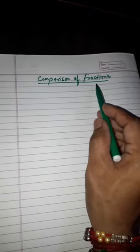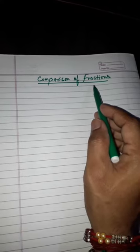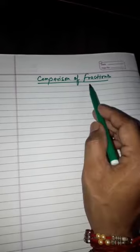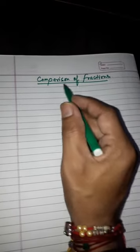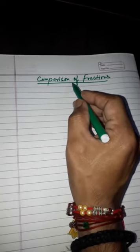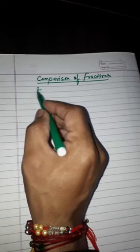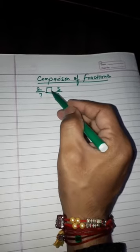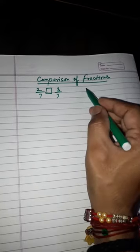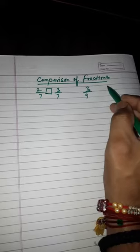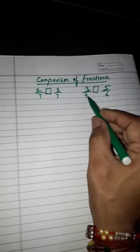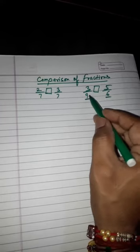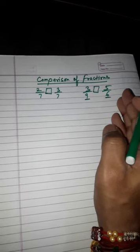Hello dear students, today we are going to take the topic of comparison of fractions. Under this method, we will compare between two fractions — which one is greater, which one is smaller, and which are equal. For example, two upon seven or three upon seven, and three upon nine and five upon six — we have to compare these fractions.